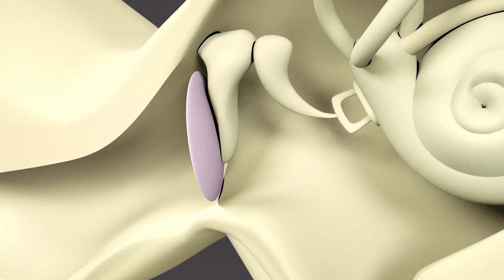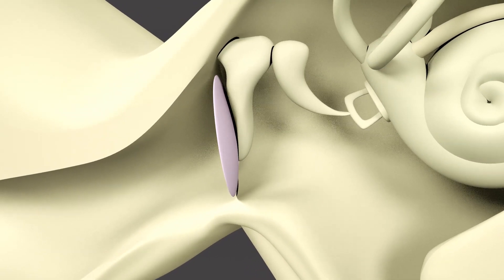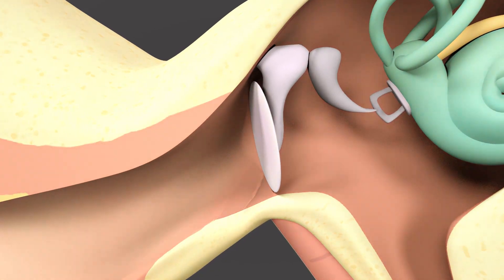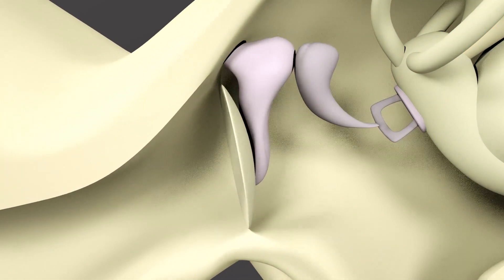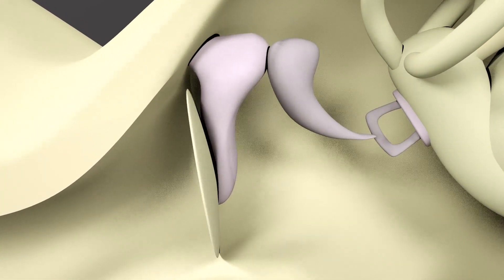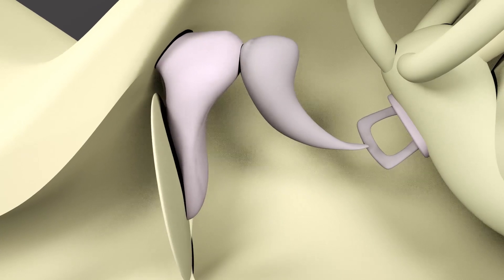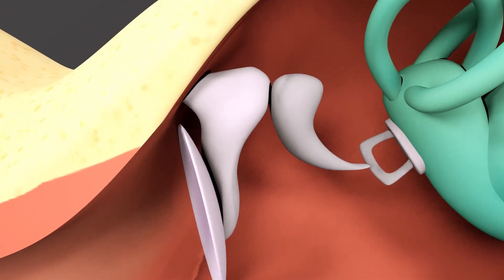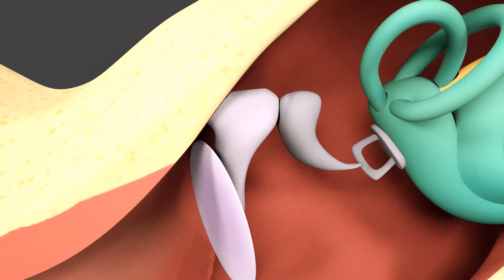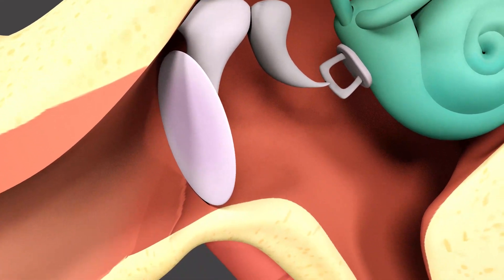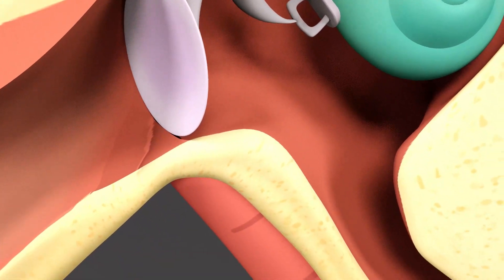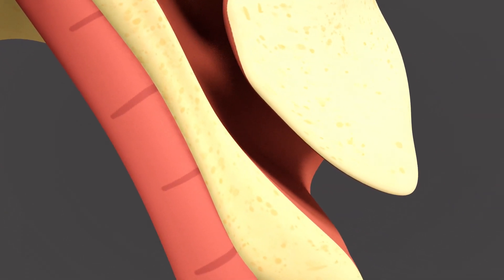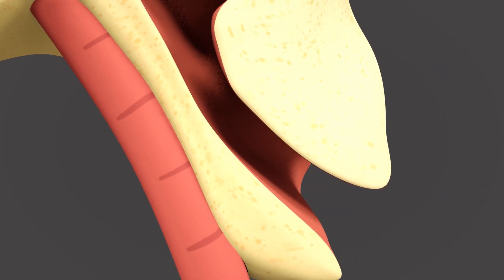When sounds reach the tympanic tissue, it starts vibrating and causes the tiny bones to move. The tiny bones — the hammer, incus, and stirrup — amplify the vibration transmitted by the eardrum, then send the amplified signal to the cochlea. The Eustachian tubes connect the middle ear to the nasopharynx.